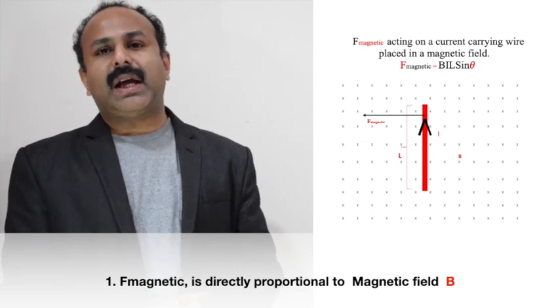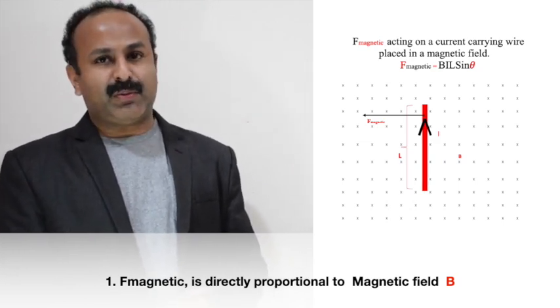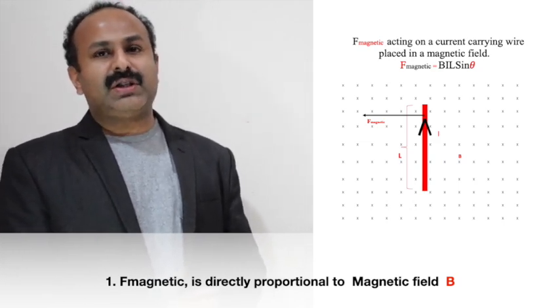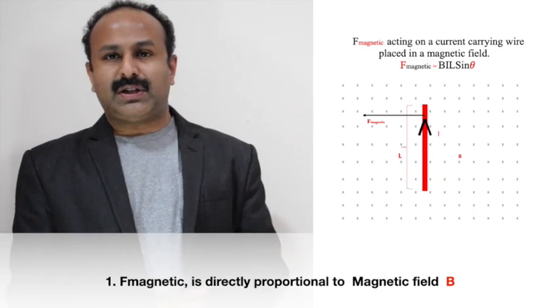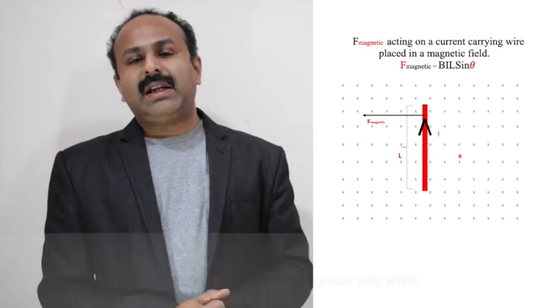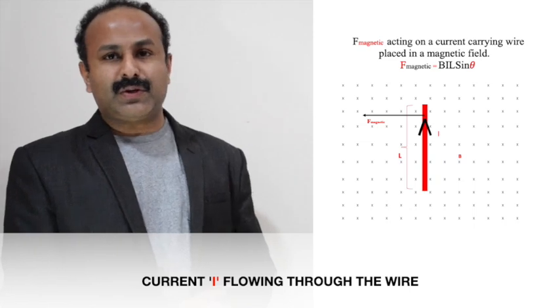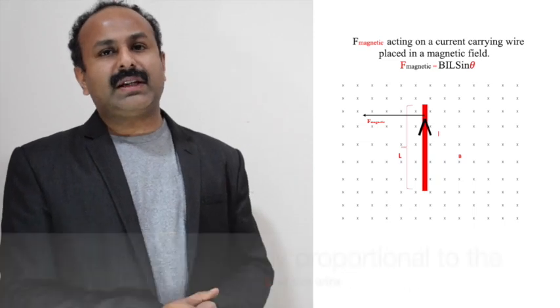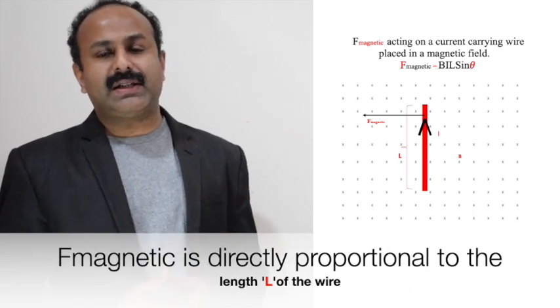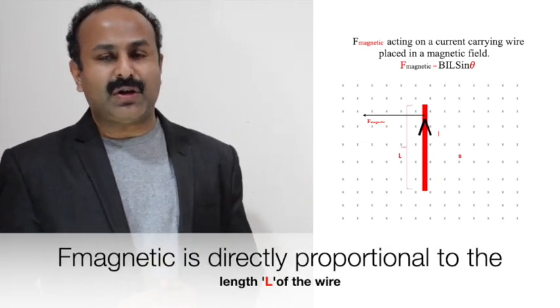F magnetic is directly proportional to the magnetic field B, the current flowing through the wire I, and also F magnetic is directly proportional to the length L of the wire.